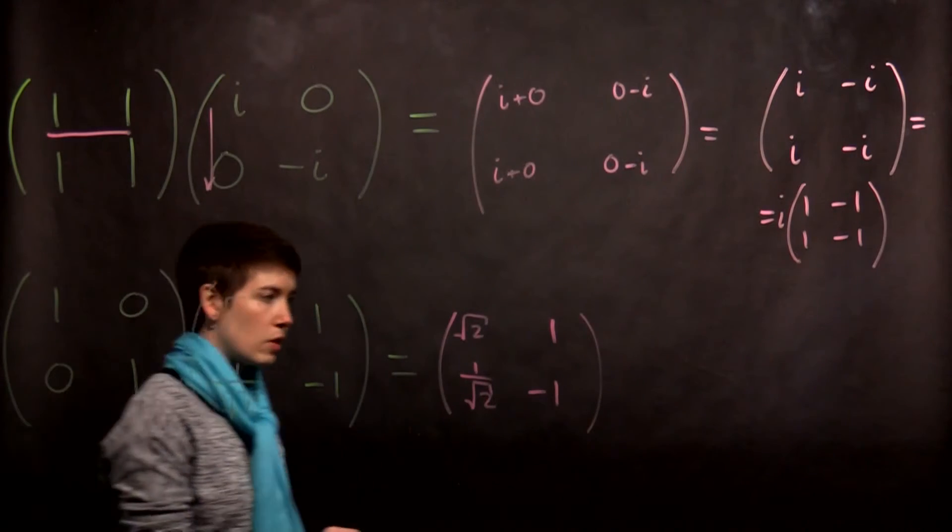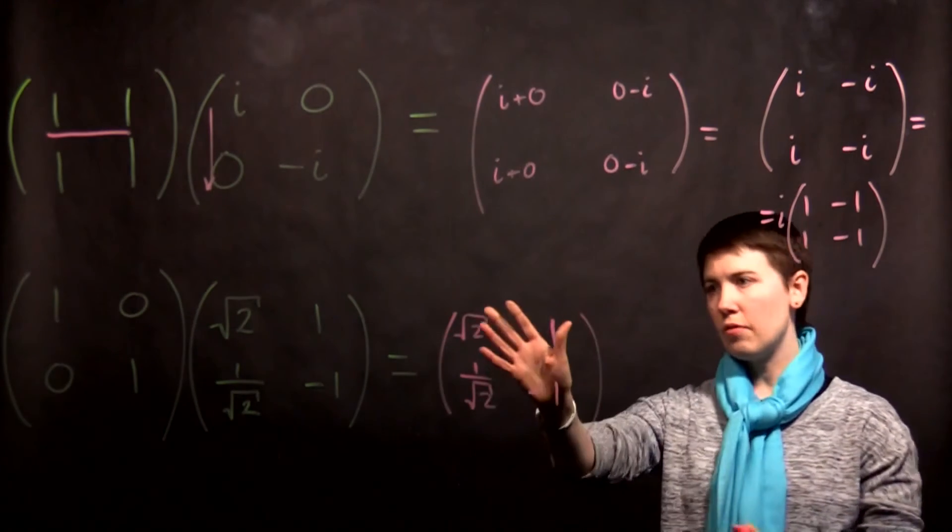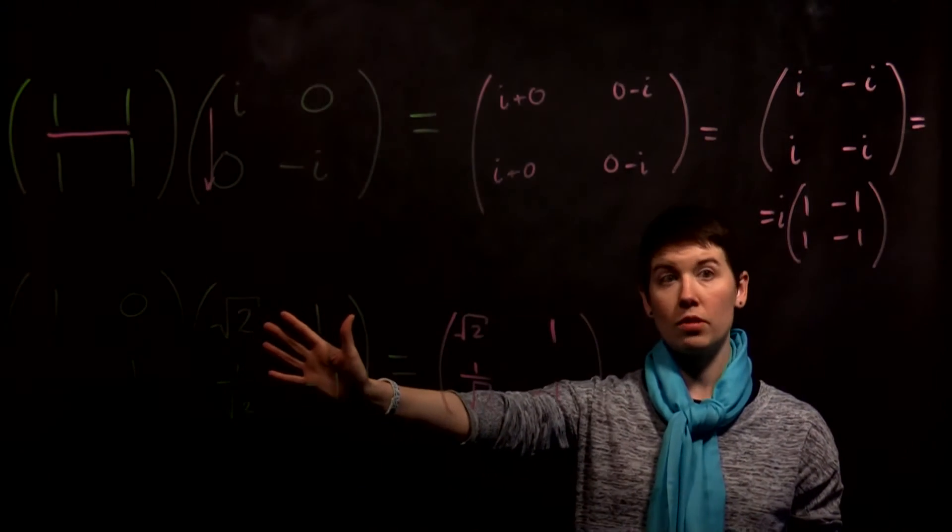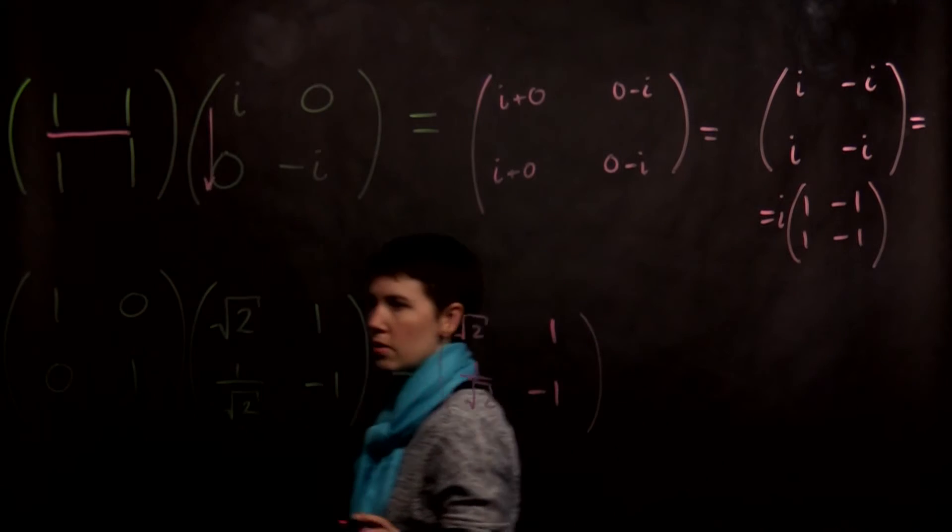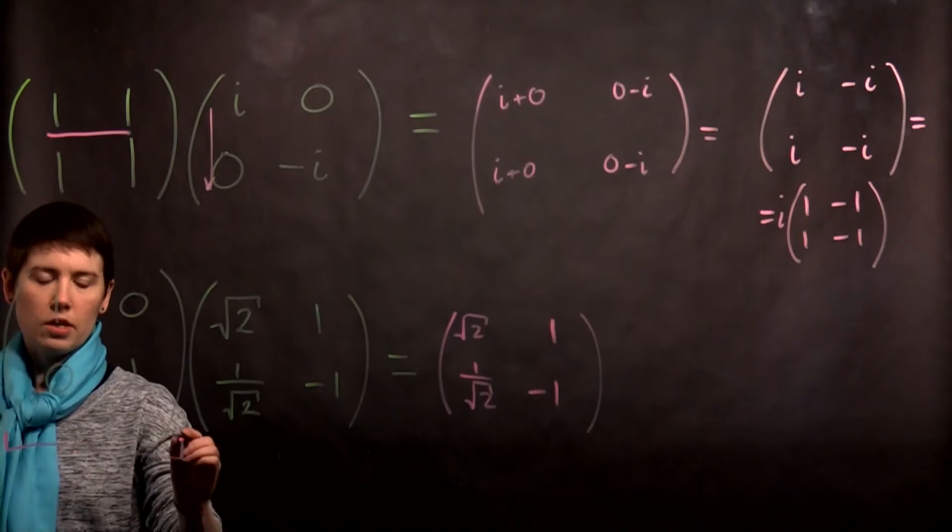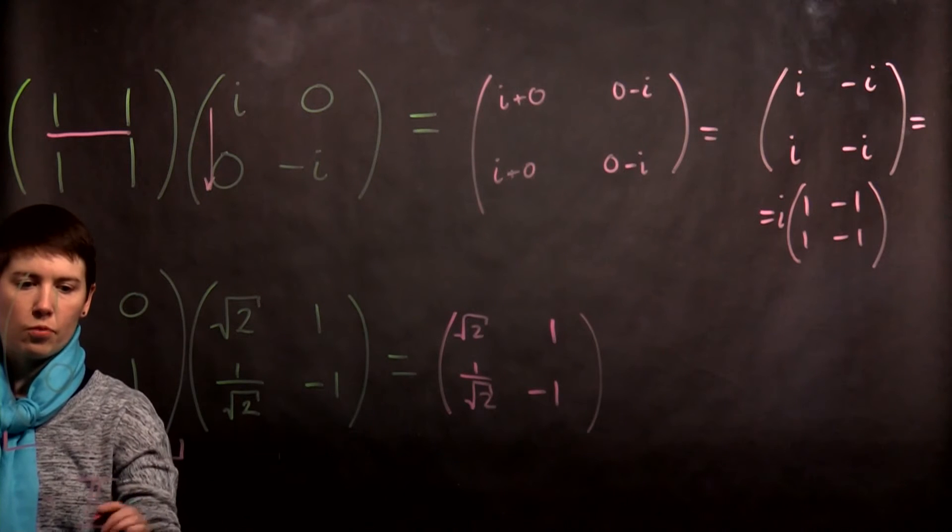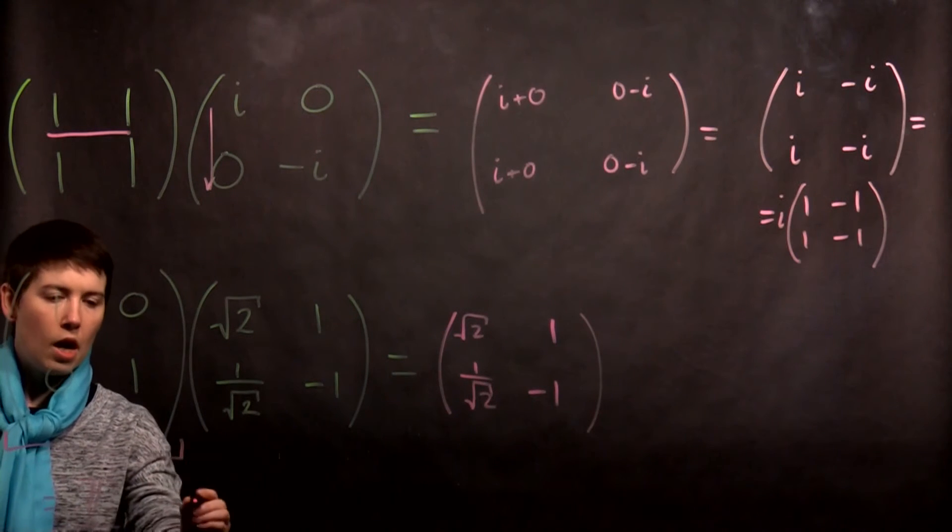And now if you notice, what has happened here is that in fact our result matrix, this 2 by 2, looks identical to this matrix here. And the reason for that is that this matrix is something special called the identity matrix.